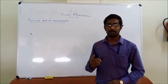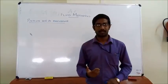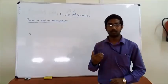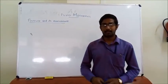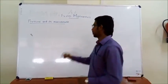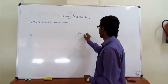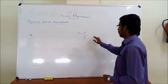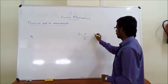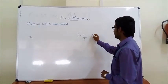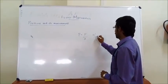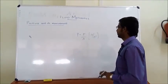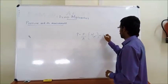First of all, let me introduce to you what is fluid pressure. It is nothing but the normal force acting on a fluid per unit area. We can represent the pressure as P is equal to force divided by A. The unit of force will be Newton and the area is meter square. So the unit of pressure will be Newton per meter square, and it is also called Pascal.